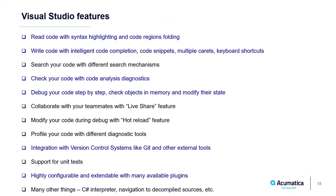Visual Studio is a convenient code editor that helps you read code with syntax highlighting and code region folding, write code with smart code completion, insert prepared code snippets, use multiple carets to edit similar pieces of code, and perform quick actions with keyboard shortcuts. Visual Studio finds errors in your code while you type using code analysis diagnostics, including custom diagnostics you can write yourself. You can debug code step by step, and Visual Studio integrates with external tools like Git. It is highly configurable: you can set custom colors, configure folding, enable word wrap, and customize the scroll bar.